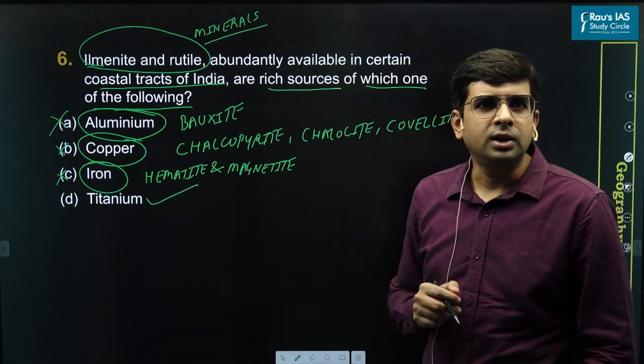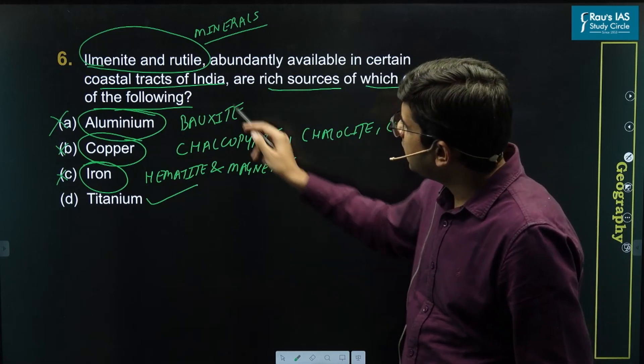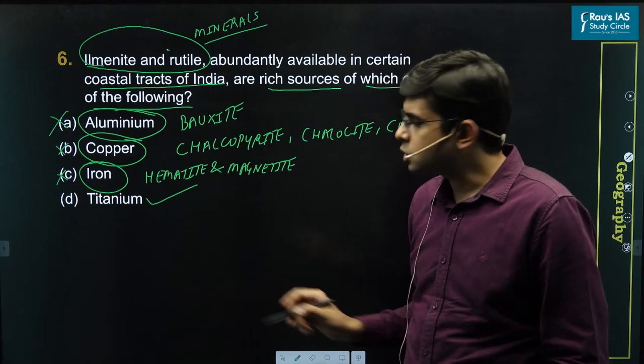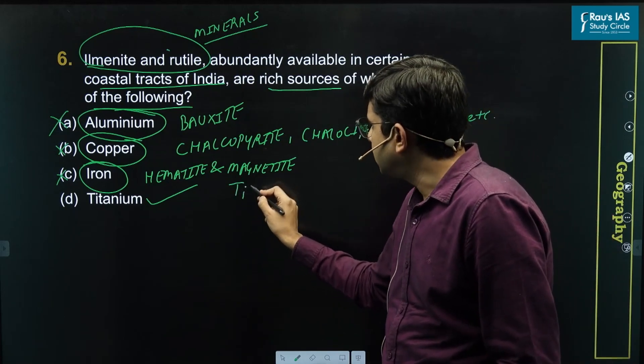that is titanium. So ilmenite and rutile both of them are the chief or abundant source for titanium oxide, TiO2.